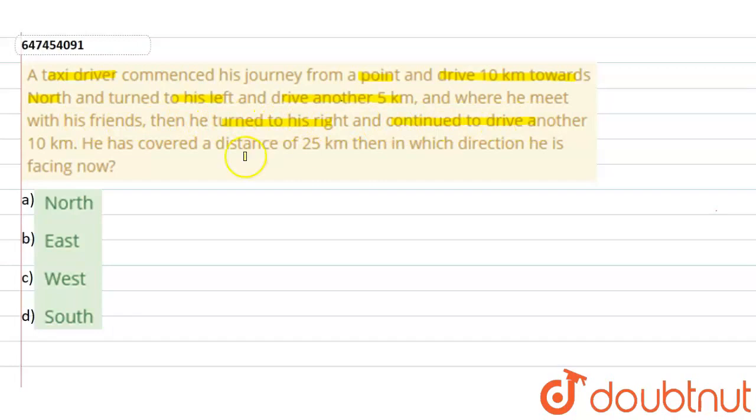To his right and continue to drive another 10 km. He has covered a distance of 25 km. Then in which direction is he facing now?